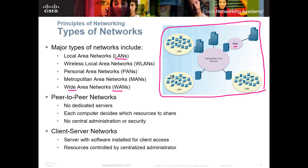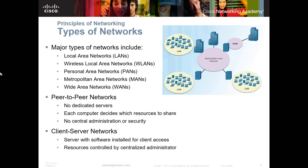A wireless local area network (WLAN) could be where you set up a router with antennas and connect wirelessly to end devices. A personal area network (PAN) would be an example of Bluetooth devices — for instance, if you have a keyboard, mouse, or headphones connected to your device through Bluetooth, those devices communicating with each other form a personal area network.